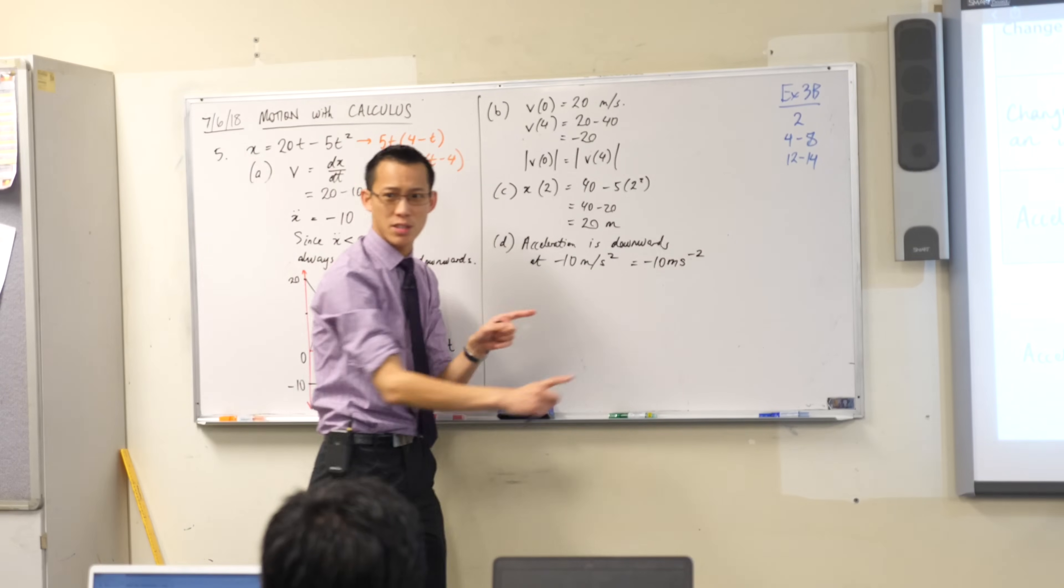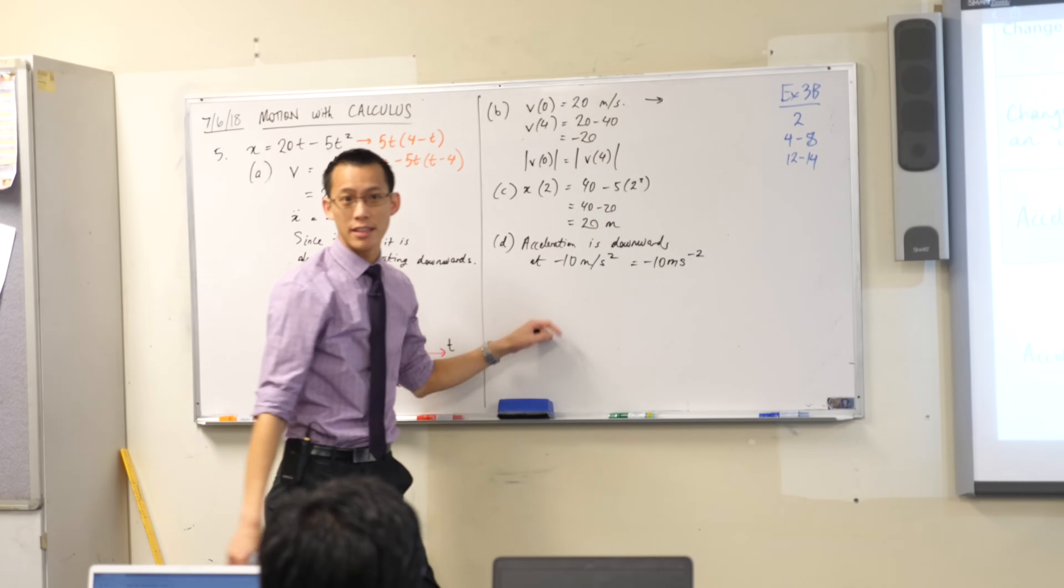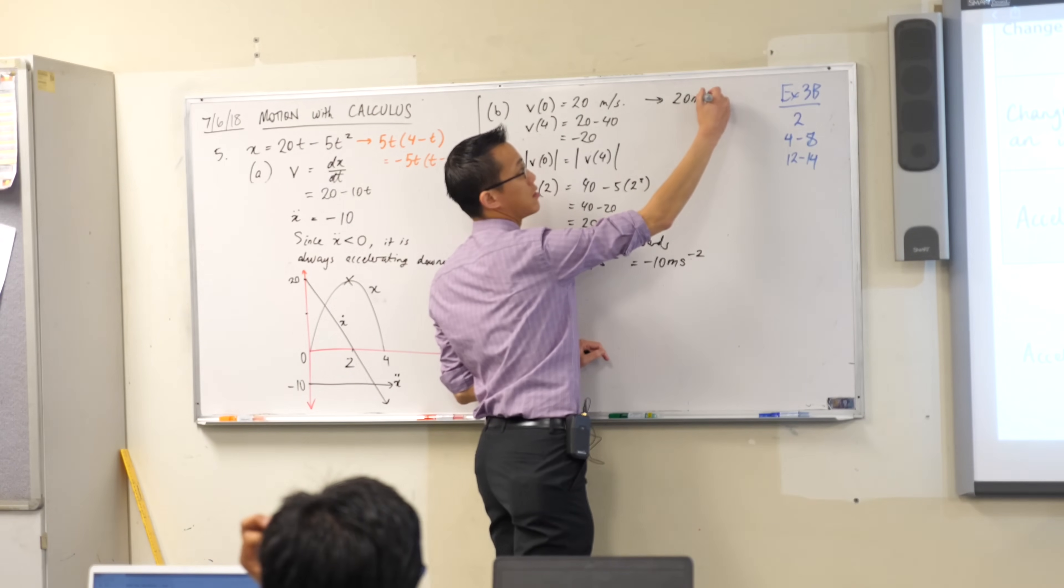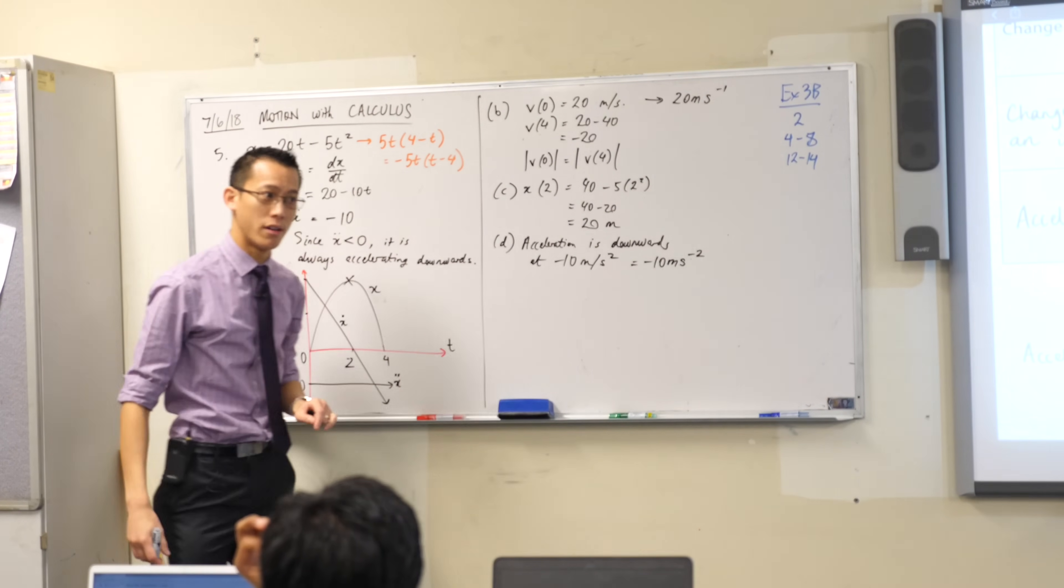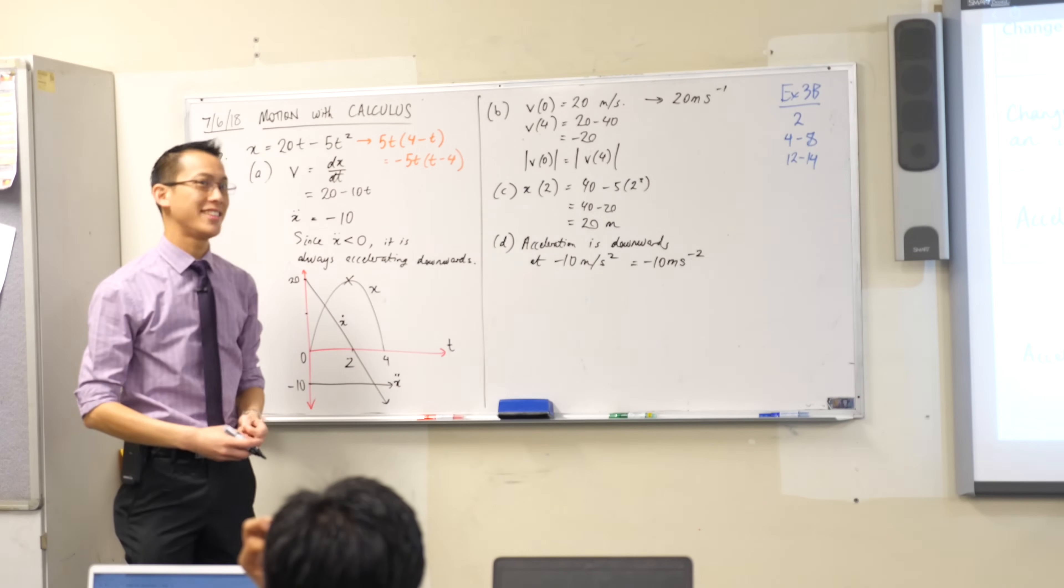So you're going to have to get used to seeing that and recognising, or accordingly, up the top here, how could I write velocity instead of using that notation? Yeah, it's 20 metres per second, and that's how I write the per part of it, okay? Because that just means take the fraction part. Yes, Mrs. Lees?